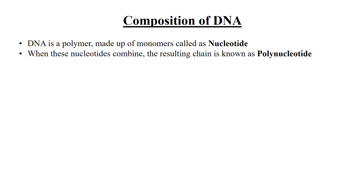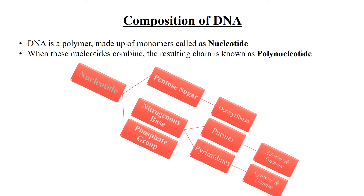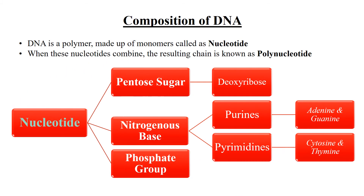Each nucleotide is made up of three key things: a sugar, a nitrogenous base, and a phosphate group. In the case of the DNA molecule, the sugar is a 5-carbon sugar, or the pentose sugar, known as deoxyribose.